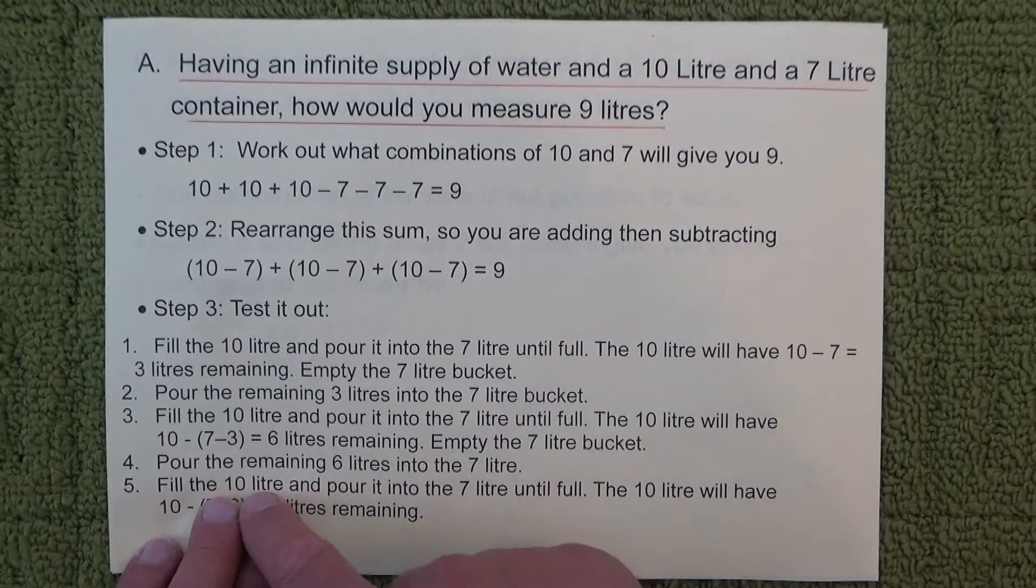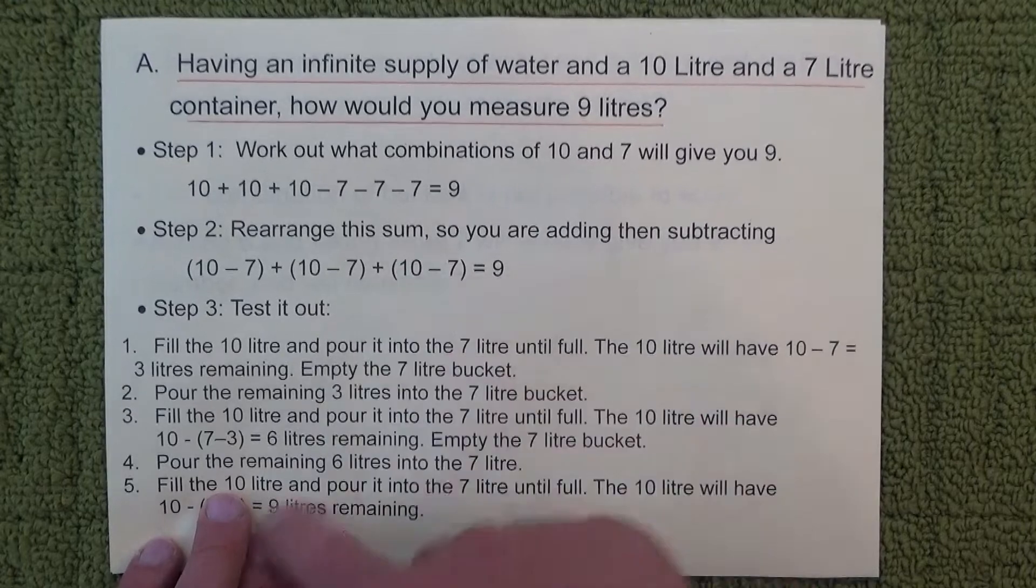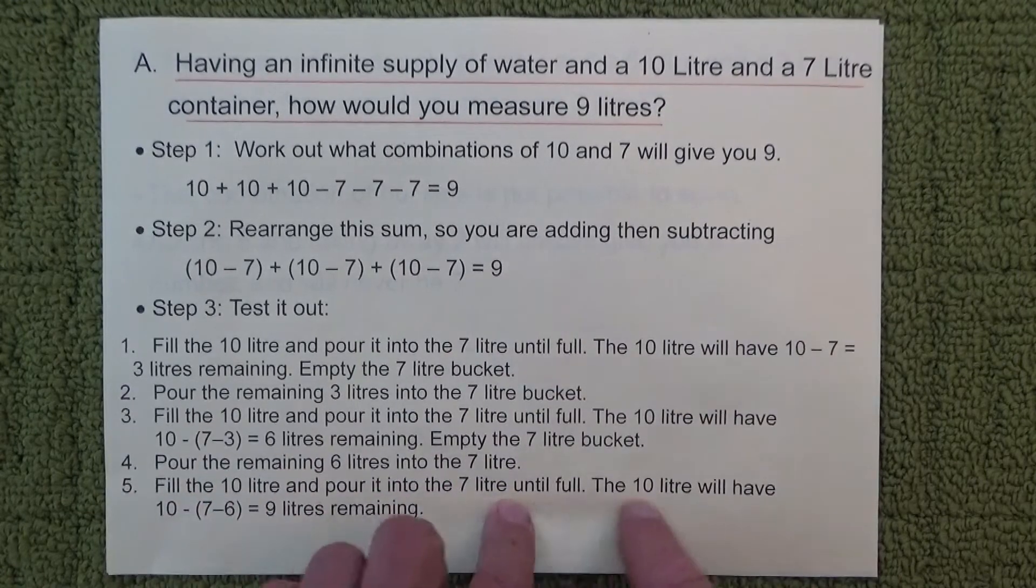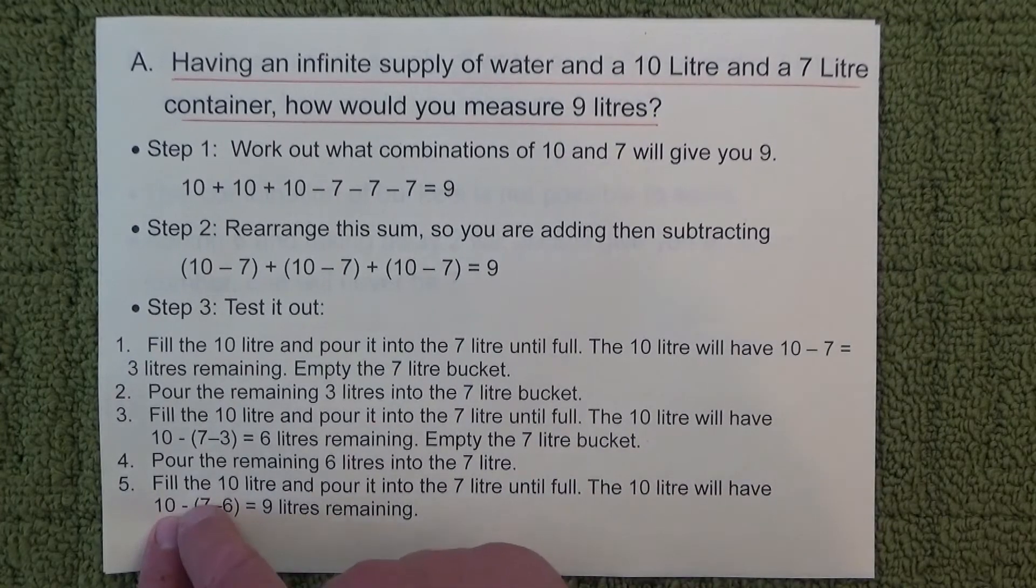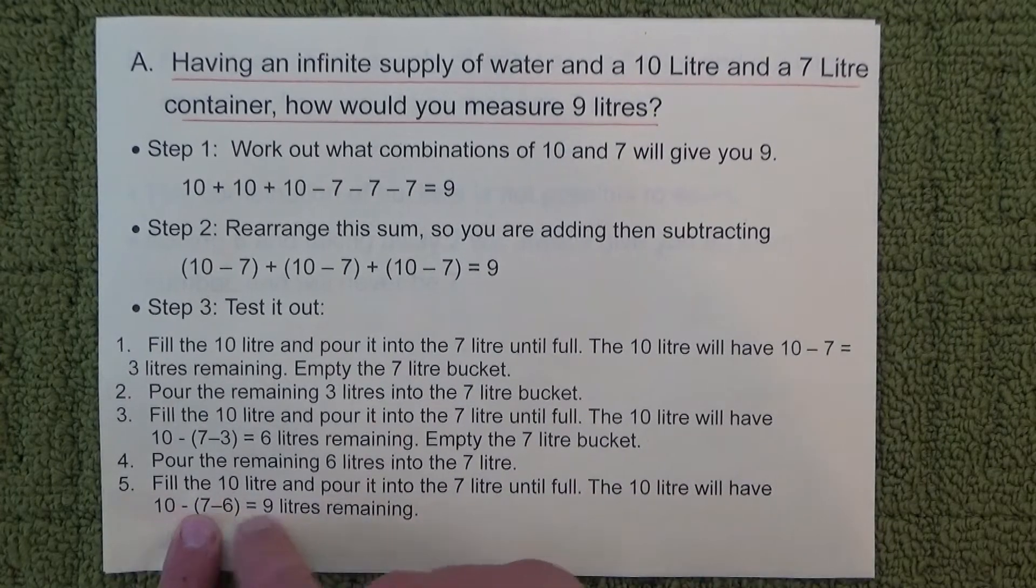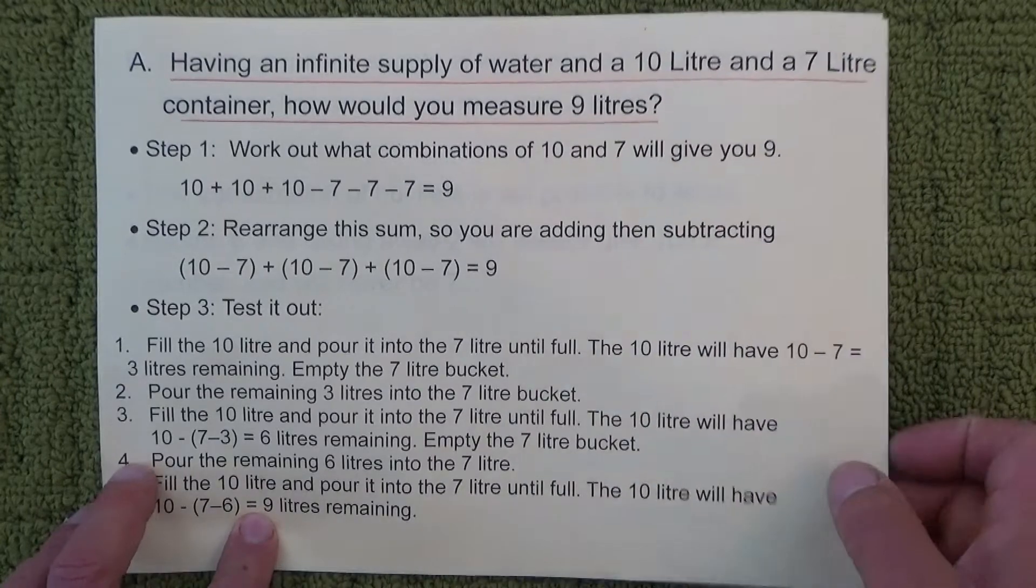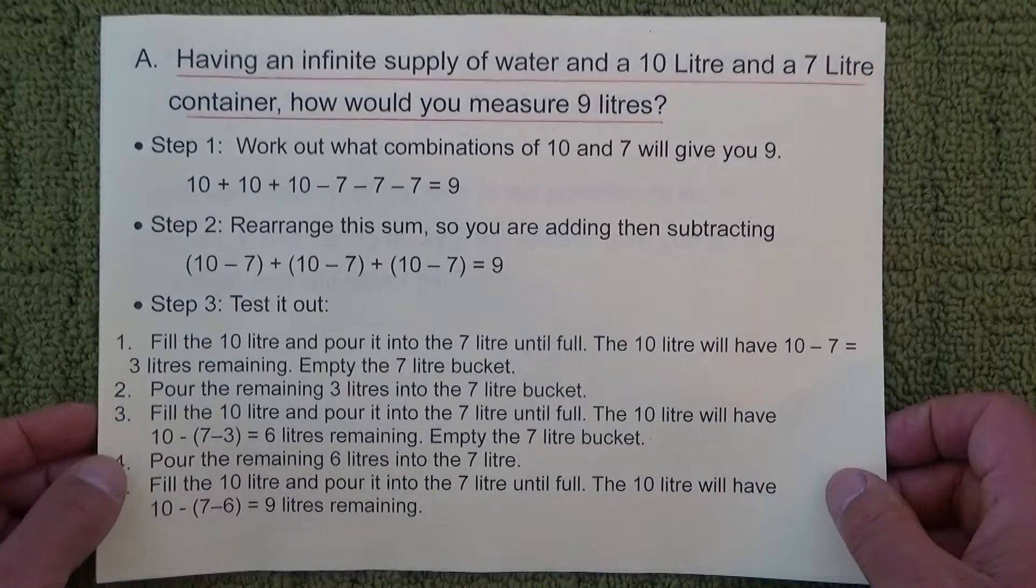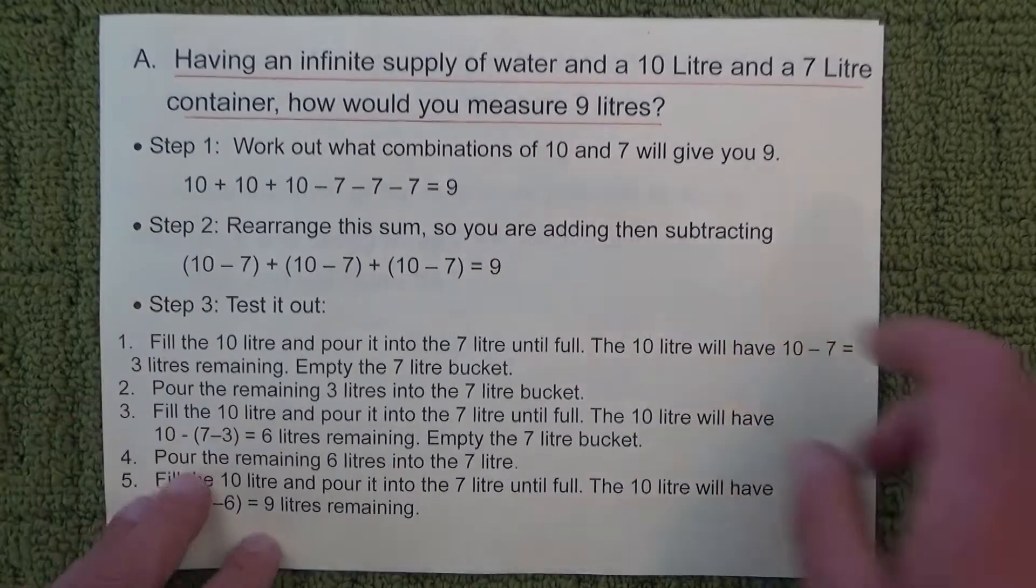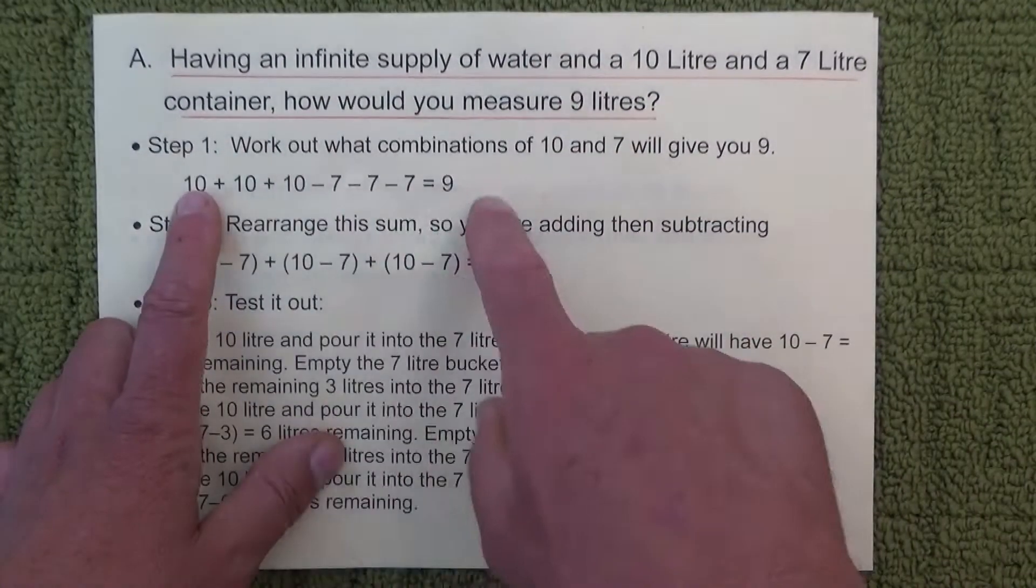And then once again we fill up the 10 litre container, which is the plus 10, pour it into the 7 until it's full. And the 10 litre will now have 10 minus 7 minus 6, which equals 9 litres remaining, which is that sort of third lot of 10 minus 7.